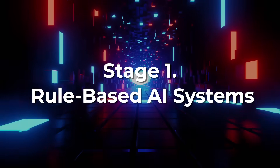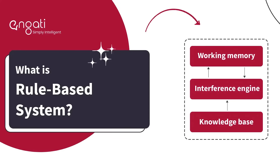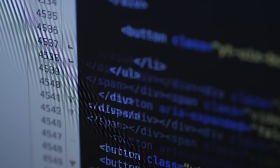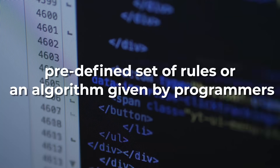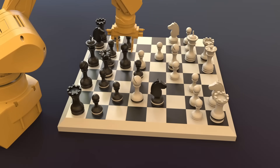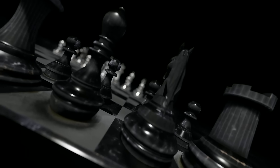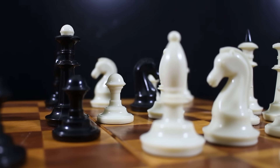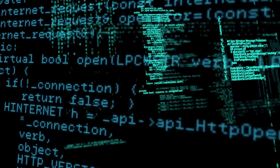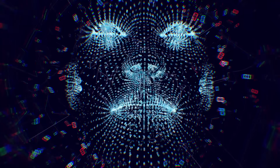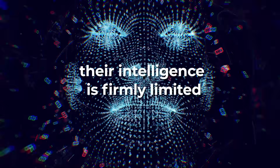Stage 1: Rule-Based AI Systems. Rule-based AI systems, also known as one-task systems, represent the earliest stage of artificial intelligence. These systems operate based on a predefined set of rules or an algorithm given to them by programmers. Imagine playing a game of chess against a computer — the computer knows all possible moves and outcomes based on its coded rules, and can decide the best move, but it cannot learn or adapt beyond them. These systems are excellent for tasks with clear-cut rules, like diagnosing a mechanical problem or processing tax forms. They're reliable and consistent, but their intelligence is firmly limited.